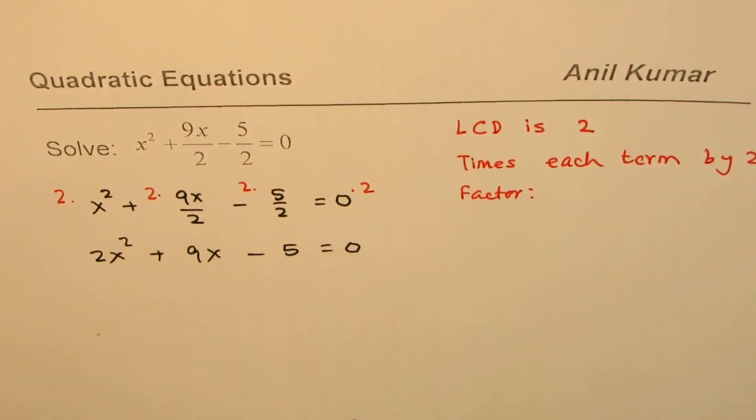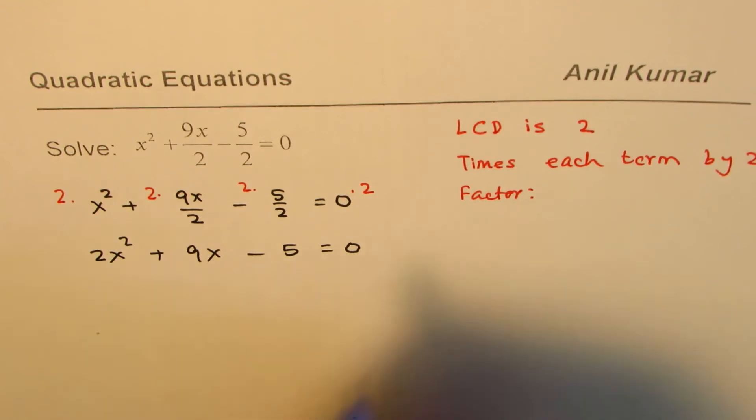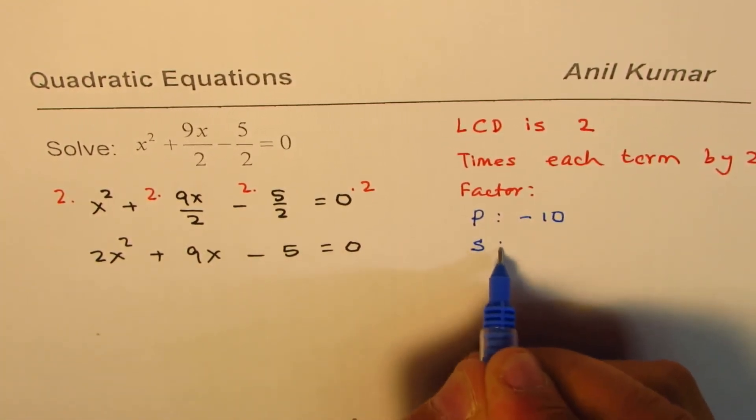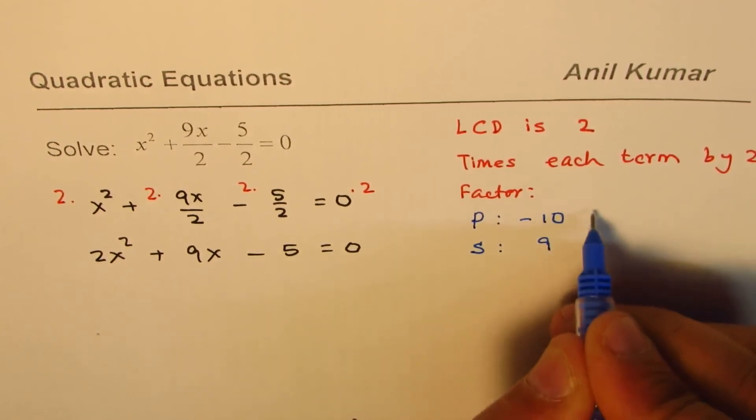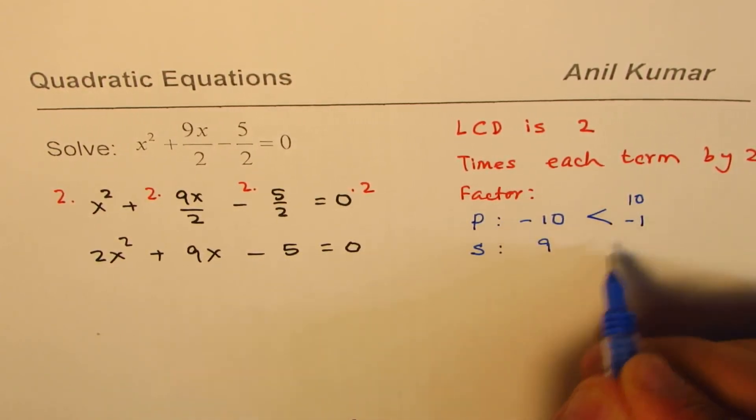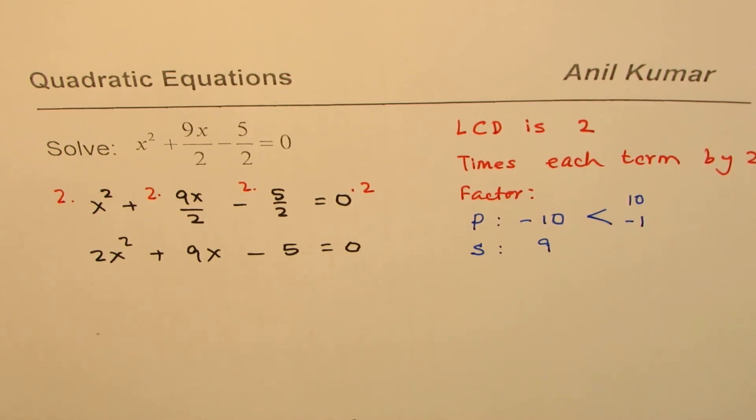We're looking for a product which should be 2 times -5, so the product should be -10, and the sum should be 9. The two numbers could be 10 and -1. When you add them, you get +9. When you multiply them, you get -10.